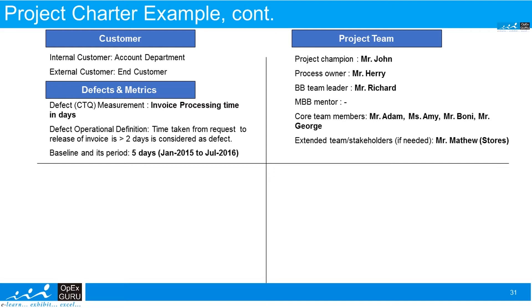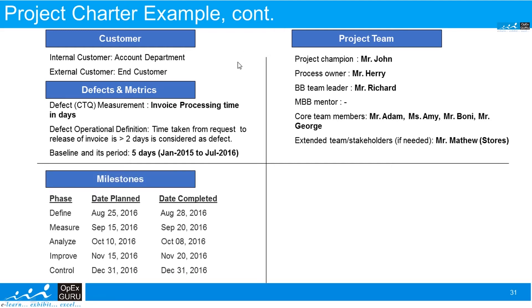What are the milestones or timeline that we are trying to achieve in this particular project? So Define phase will be planned on 25th of August, completed on 28th of August. Likewise, we have for all the other phases: Measure, Analyze, Improve, and Control. And we expect to close this project by December 31st, 2016.